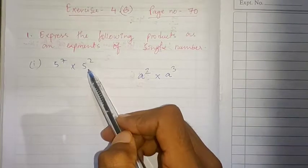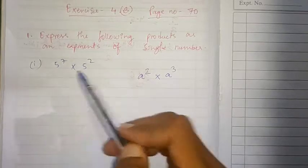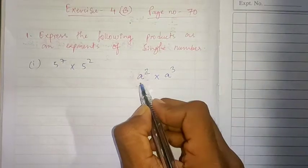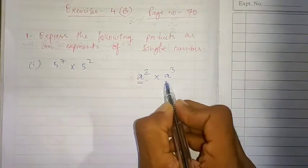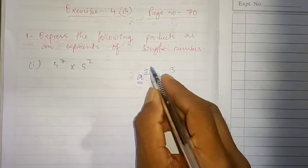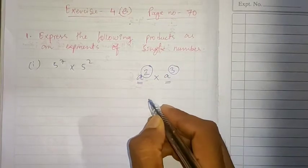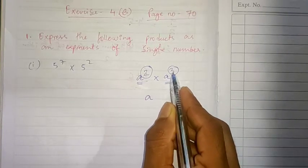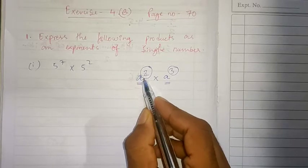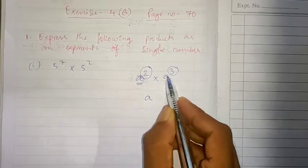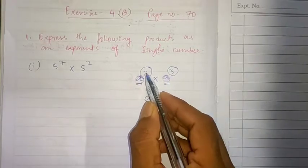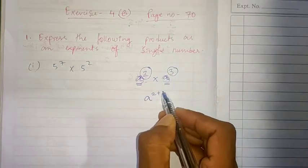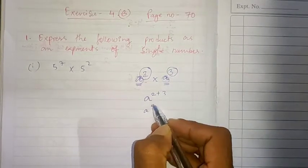Before starting this exercise, I would like to tell you that whenever numbers with same base are multiplied, their power is added. So here, if A raised to 2 multiplied by A raised to 3, what will happen? The bases are same, so the power will be added, 2 plus 3. The answer will be A raised to 5.